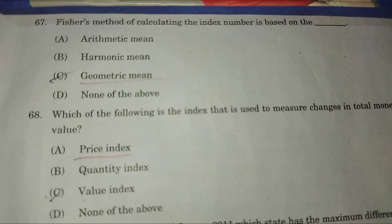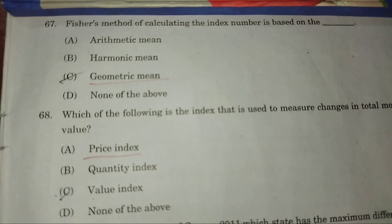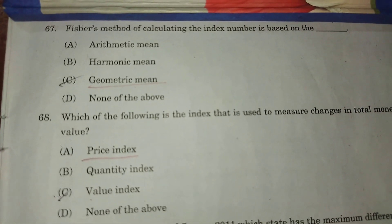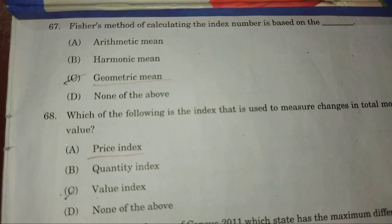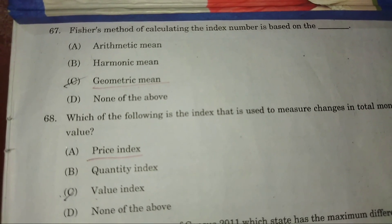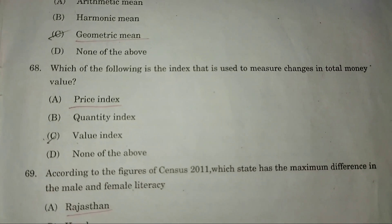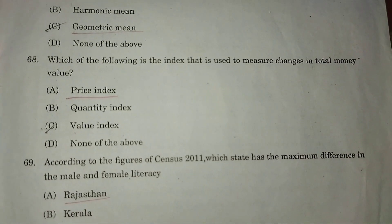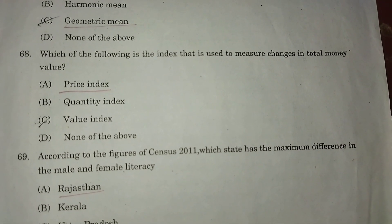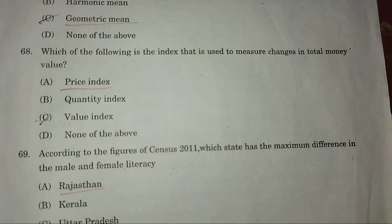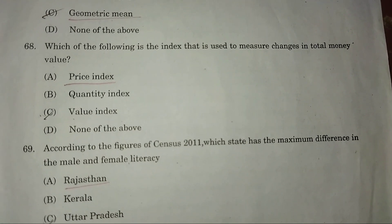Question 67: The Fischer method of calculating index numbers is based on — answer: C — geometric mean. Question 68: Which of the following is the index used to measure change in money value? Answer: A — price index.